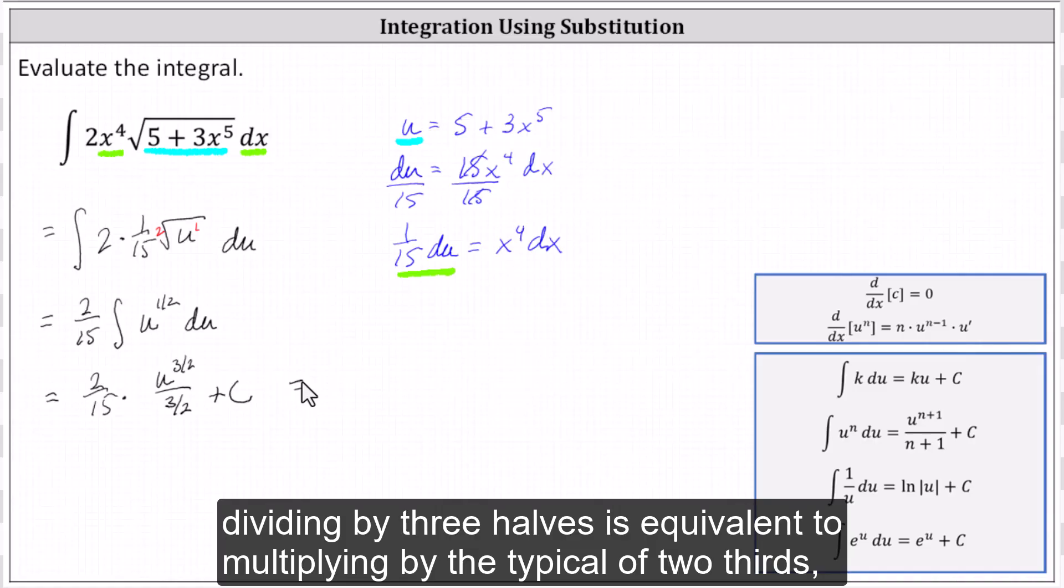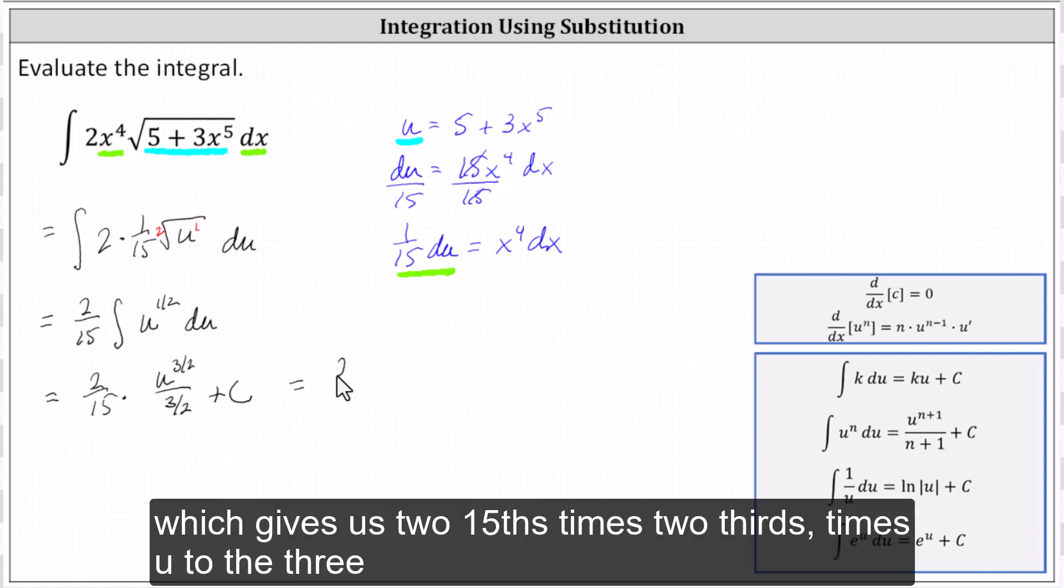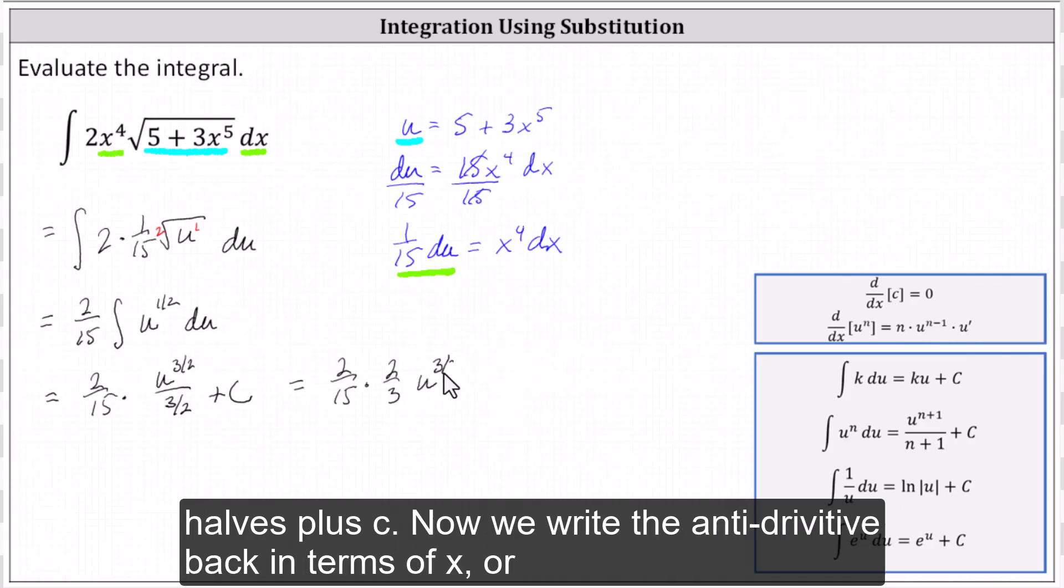Recall that dividing by 3/2 is equivalent to multiplying by the reciprocal of 2/3, which gives us 2/15 times 2/3 times u to the 3/2 plus c.